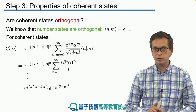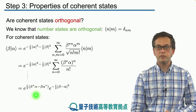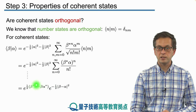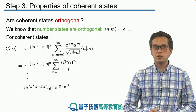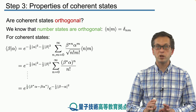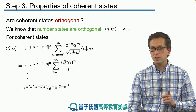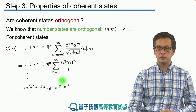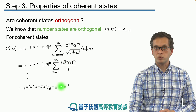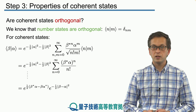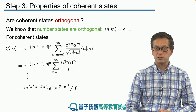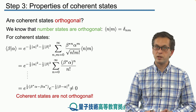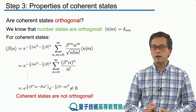Beta and alpha are complex numbers, therefore their product is a complex number. But here we're taking the difference between beta conjugate times alpha and beta times alpha conjugate — the conjugate of this product is just this product, meaning it's a pure imaginary number. So the first exponential is just e to the power of some pure imaginary, which is just a phase. The inner product can be complex because alpha and beta have complex eigenvalues. The second exponential is a real number because we're taking the modulus of the difference between beta and alpha squared divided by 2. The whole expression is not equal to zero — two coherent states are not orthogonal, in contrast to number states.